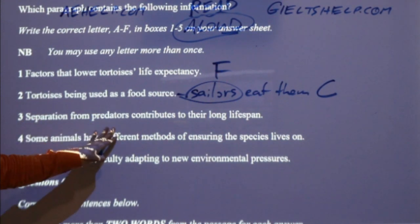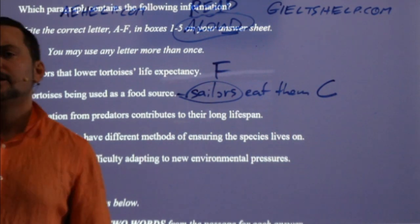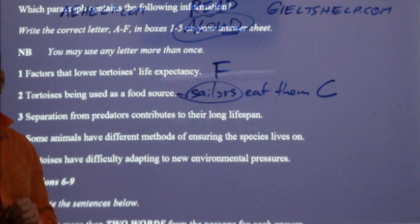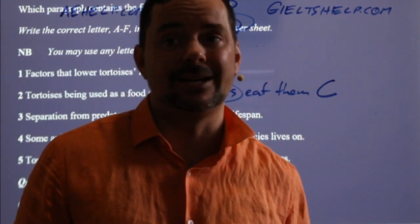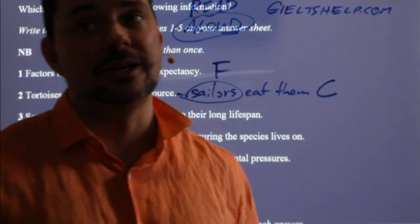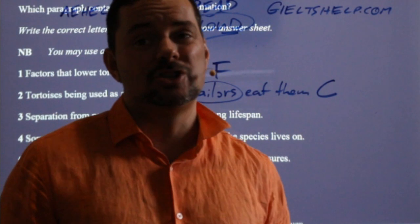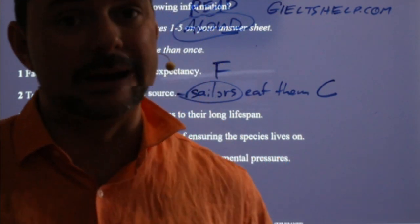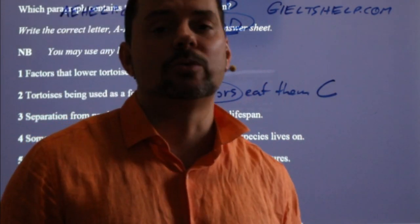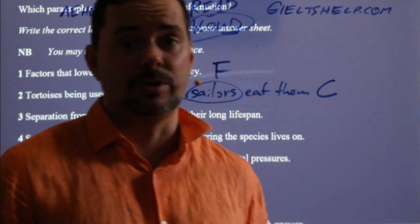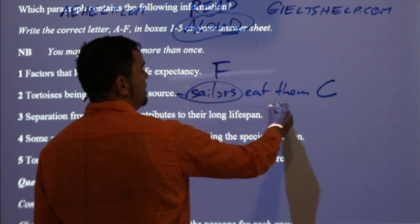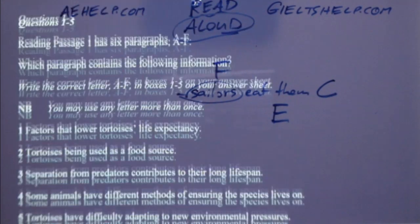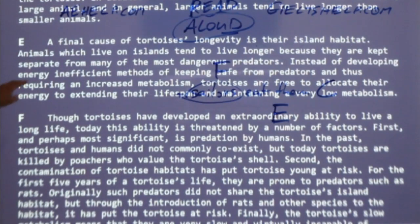Number three: 'Separation from predators contributes to their long lifespan' — where's that one coming from? Many students are skim reading and scanning because they are taught bad information by teachers who would never use those skills if they actually sat the exam. All IELTS teachers would actually read the passage before answering the questions — no IELTS teacher would ever use skimming and scanning as their main strategy without reading. So number three: many of you are saying E. Yeah, I seem to remember E — it was island isolation, living on an island. 'A final cause of tortoise longevity is their island habitat.' I'm confident it's E.